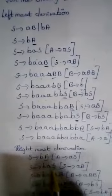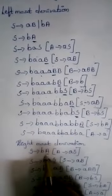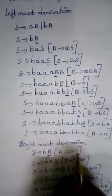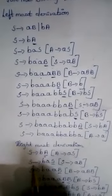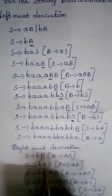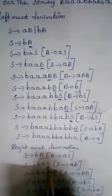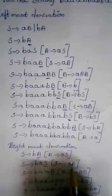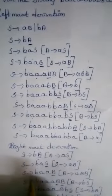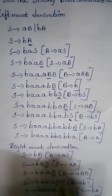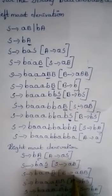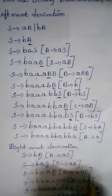Then the rightmost derivation: S turns to BA. This A we are considering. This A turns to AS and S turns to BAS. Next we are considering this S. This S turns to AB, then S turns to BAAB. B turns to A, and this B turns to ABB.